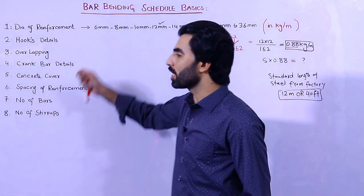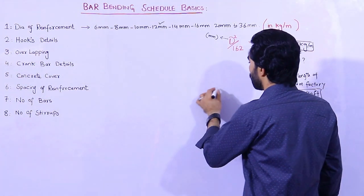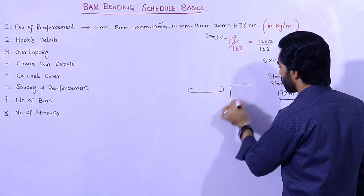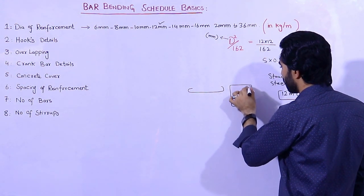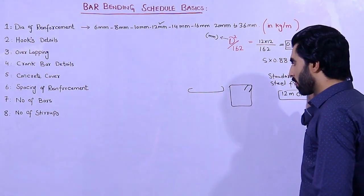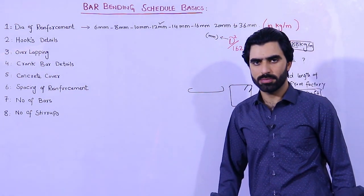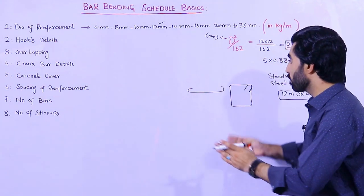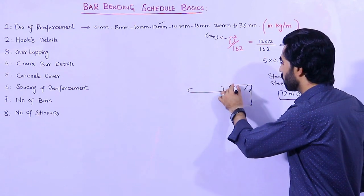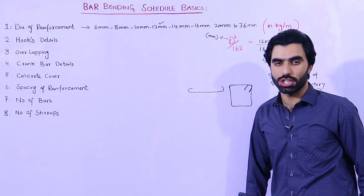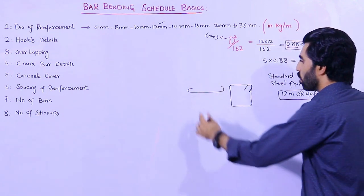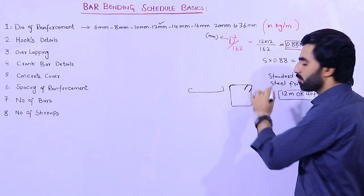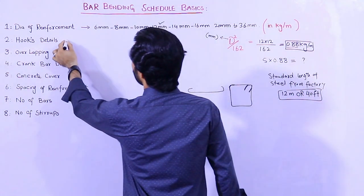The next topic is hooks details. Here you can see we have hooks — this is a stirrup and we are providing the hooks like this. We provide hooks so the steel cannot slip from the concrete, making a good bond between steel and concrete. Hooks are especially important for resistance in earthquake areas. To find the length of a hook, you use the formula 9D, where D is the diameter of the steel rod.